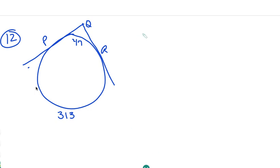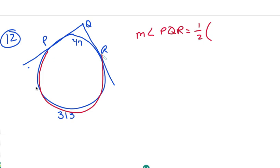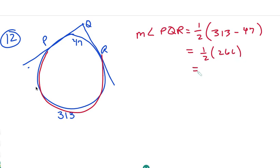So here we have the measure of angle PQR. It equals one-half of the furthest arc minus the nearest arc: one-half of 313 minus 47, which is one-half of 266, giving us 133 degrees. So that angle is 133 degrees.